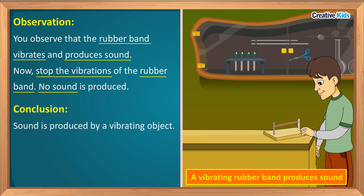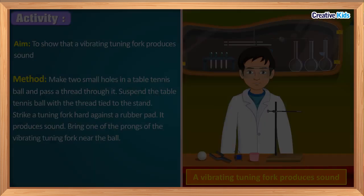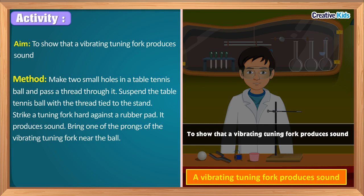No sound is produced now. So what do we conclude from this activity? We conclude that sound is produced by a vibrating object only, and no sound is produced when vibrations are stopped. Our conclusion: sound is produced by a vibrating object.